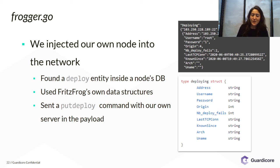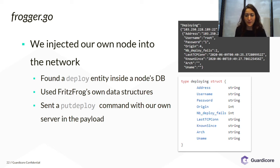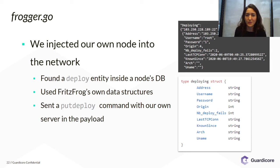Eventually we sent a put deploy command to one of the frogs with our own server in the payload. This was one of the most exciting moments of the research, because just seconds or minutes after we did that, I saw the malware process running on our SSH VM, which meant the process was successful — we managed to inject ourselves into the network.